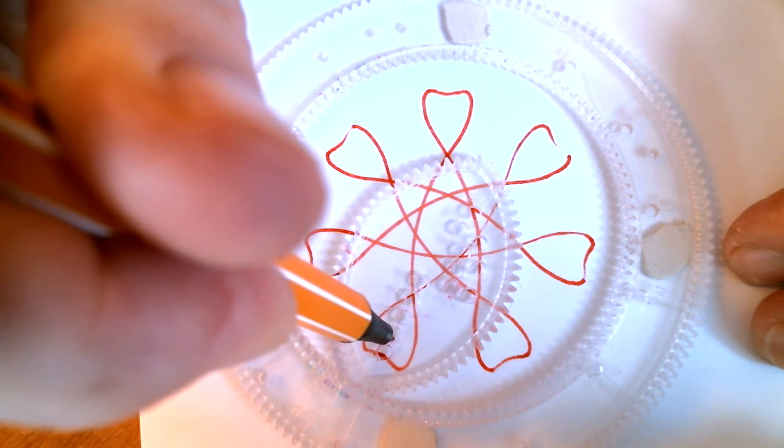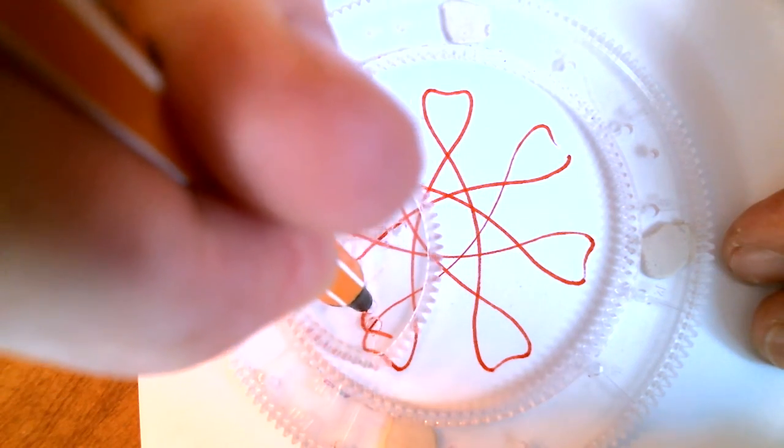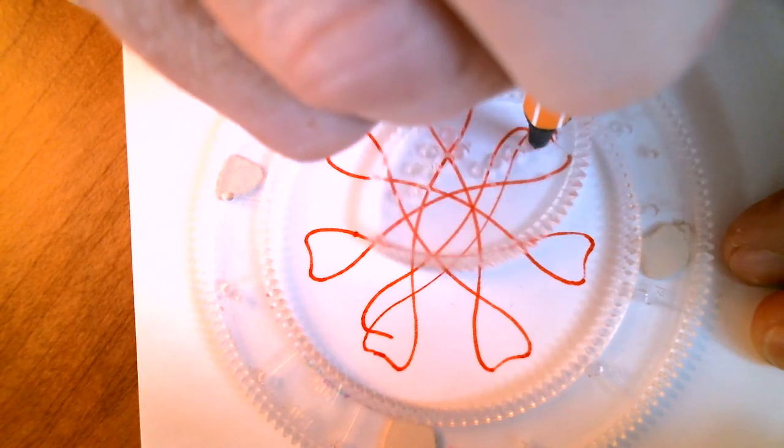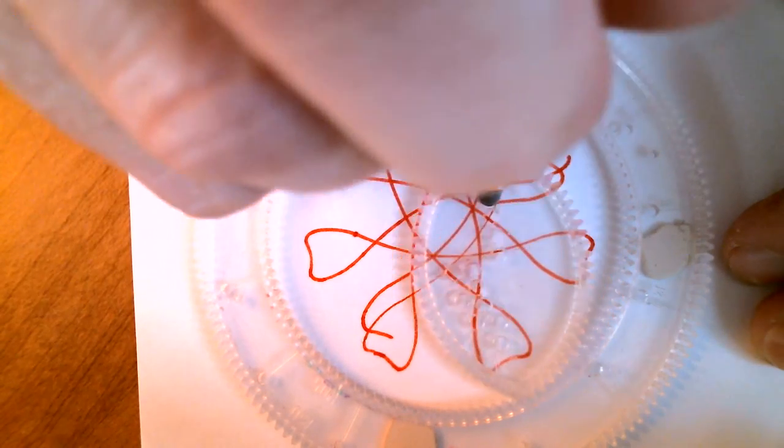Let's try the second hole. So it's also making heart-shaped designs, but they're fatter and make an interesting combination with the pattern from the first hole.